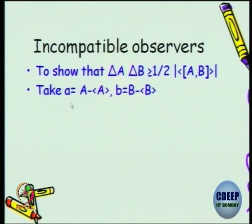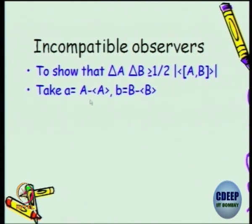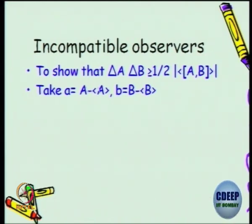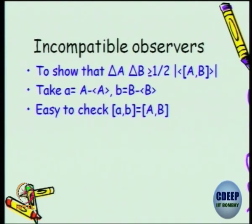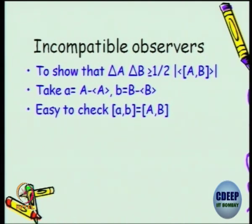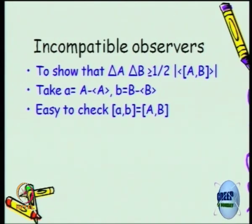First, you try to write a little 'a' to be the operator A minus the expectation value of the A operator — this is basically taking you deviation from the mean value. Similarly, define little 'b' in the same way. What happens to the commutator bracket of A with B? It will be the same as little a with little b. Why? Because the expectation value is some kind of a number, so it does not really play a role. So you can verify that the commutator [a, b] is the same as the commutator [A, B].